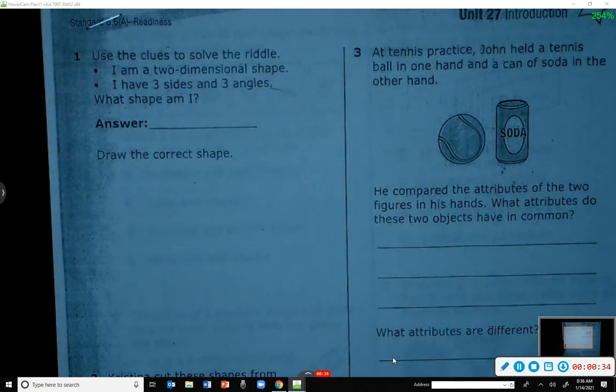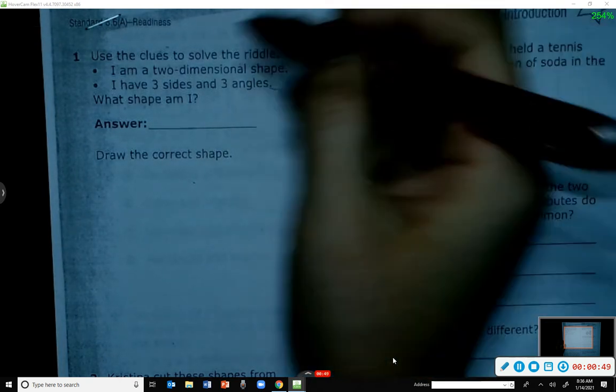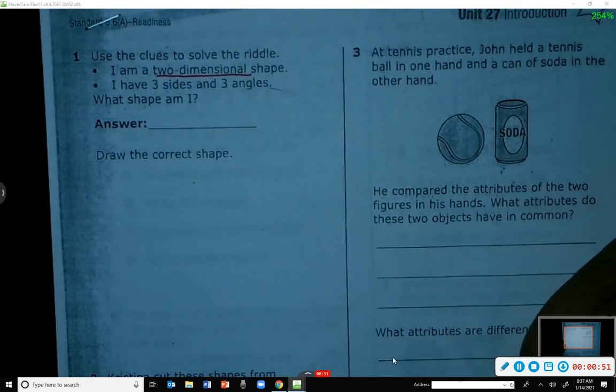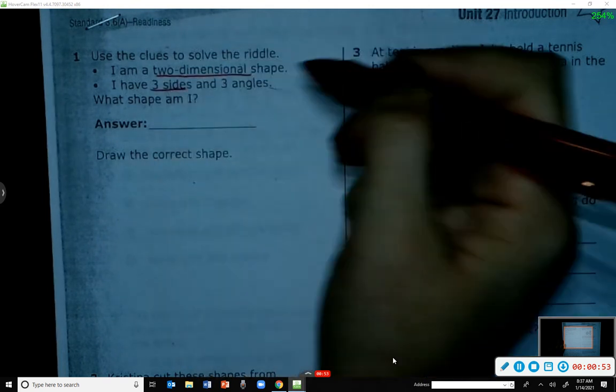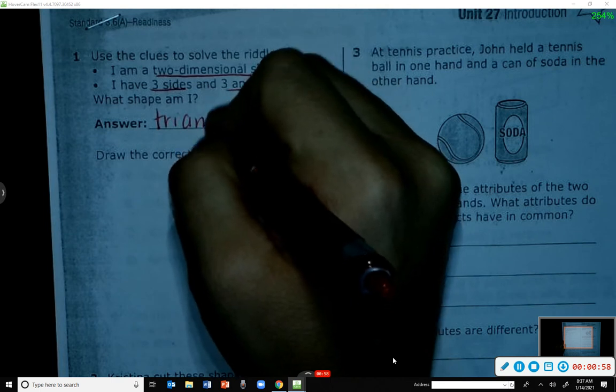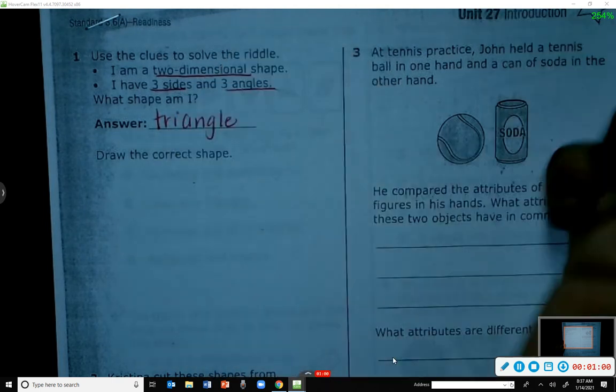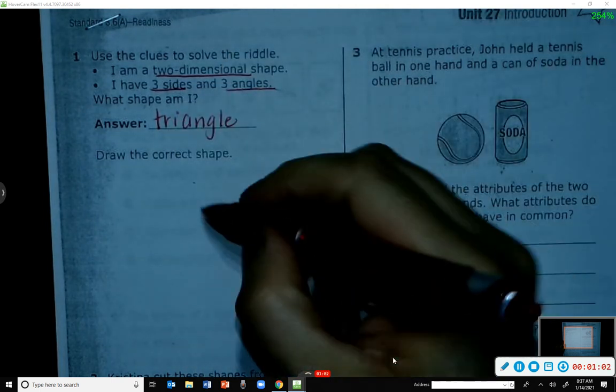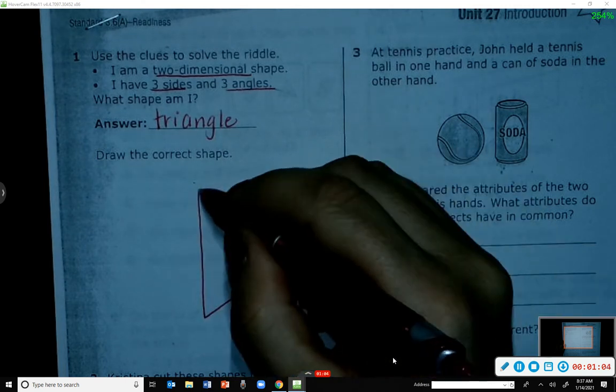Those of you at home, you can pause and try to figure that out before we tell you the answer. Now we're going to share answers. What did you get, Allie? Triangle. Good. Triangle is a 2D shape, it has three sides and three angles. So down here it said draw the correct shape - you could have drawn any triangle.